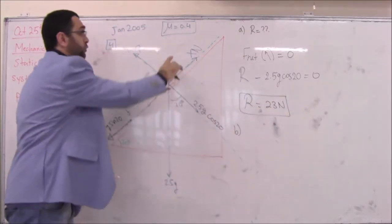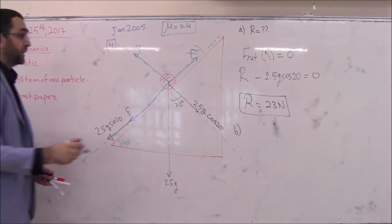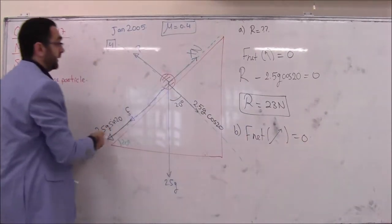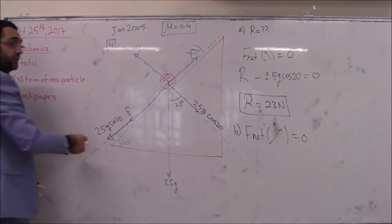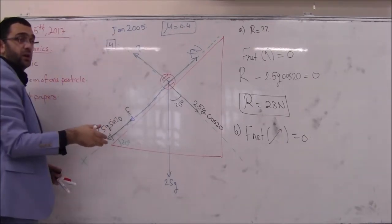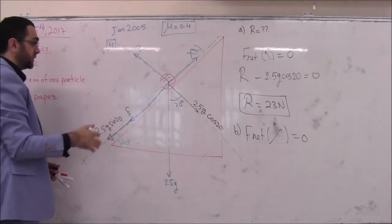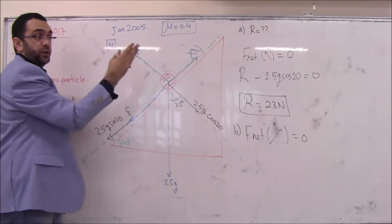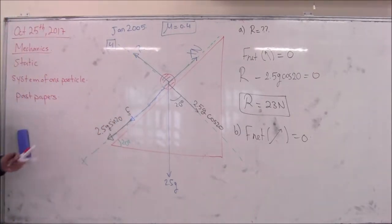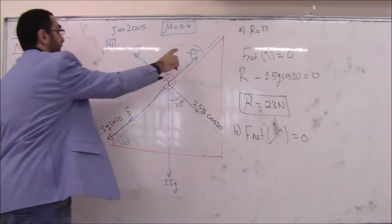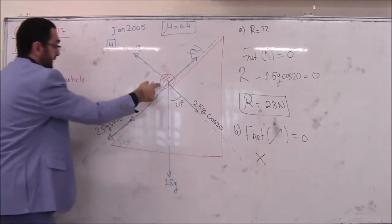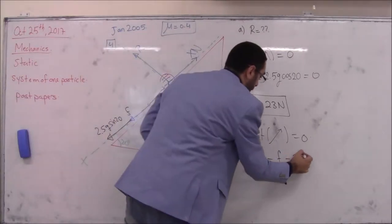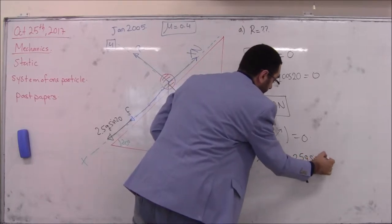For part B we find X. Taking the resultant force along the x-axis equals zero. Since it's in equilibrium and not moving, direction of positive doesn't matter. We have: X minus friction minus 2.5g sine 20 equals zero.